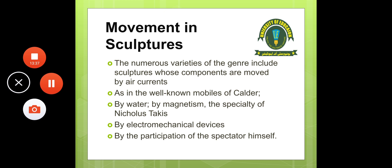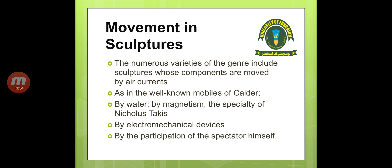There are numerous varieties of kinetic sculpture. Components can be moved by air currents, as in the well-known mobiles of Calder; by water; by magnetism, which is the specialty of Nicholas Takis; by electro-mechanical devices; or by the participation of the spectator himself — through the angle they view it, pressing a button, or touching the piece to create sound or movement.